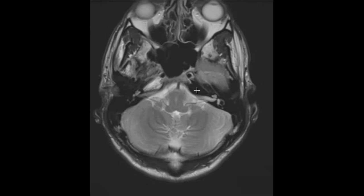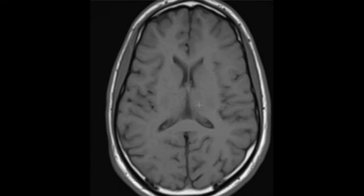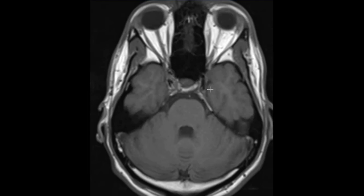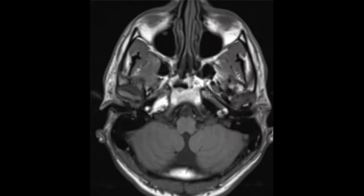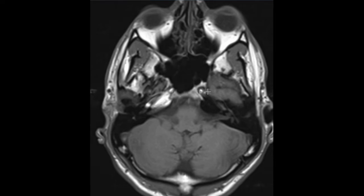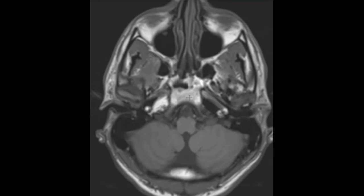This is a pneumatized petrous portion of the temporal bone — the mastoid portion is filled with air, and this petrous portion is also filled with air. Now we're going to put up this T1-weighted view and find the same area. Fat is bright, and now we can say with confidence that this is just fat.